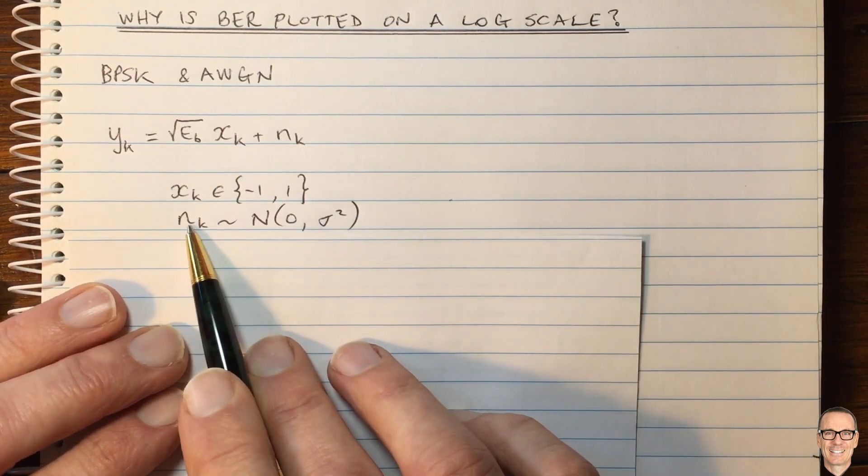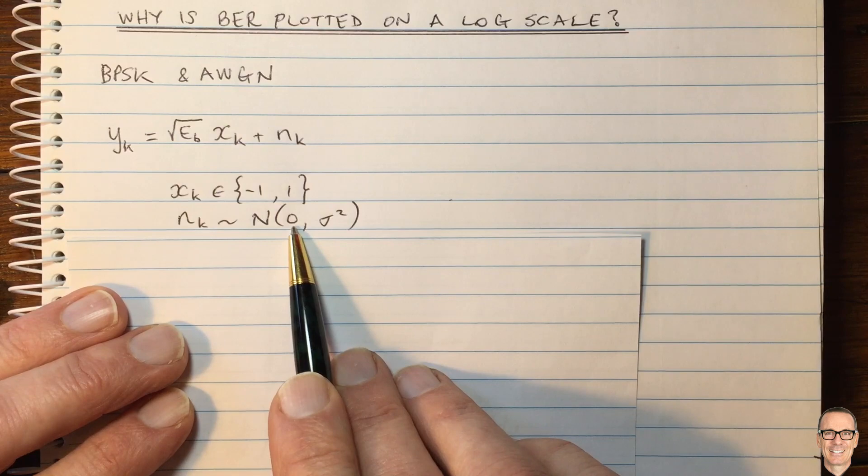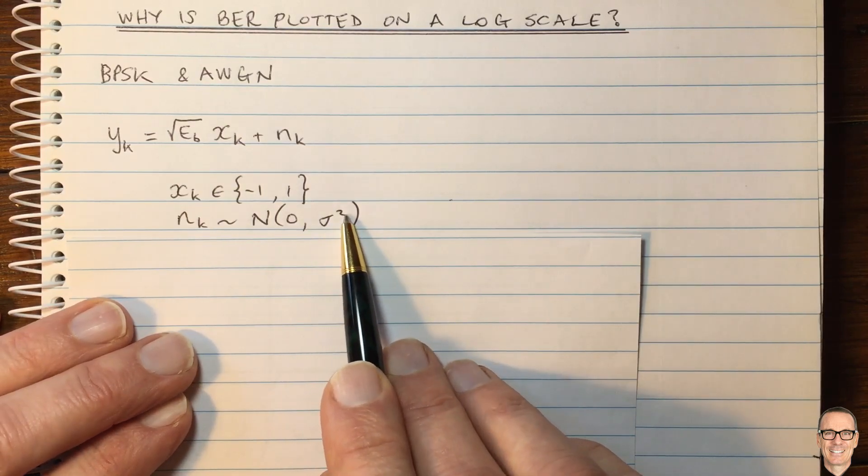So the Gaussian noise has a distribution with a zero mean and a variance of sigma squared.